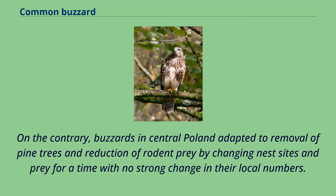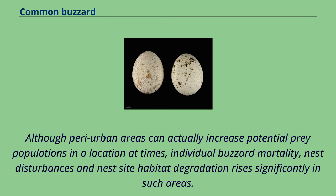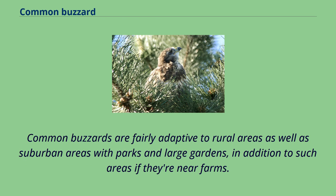Extensive urbanization seems to negatively affect buzzards, this species being generally less adaptable to urban areas than their New World counterparts, the red-tailed hawk. Although peri-urban areas can actually increase potential prey populations at times, individual buzzard mortality, nest disturbances and nest site habitat degradation rise significantly in such areas. Common buzzards are fairly adaptive to rural areas as well as suburban areas with parks and large gardens, in addition to such areas if they are near farms.